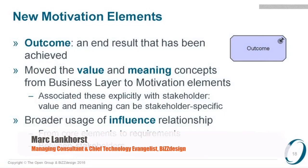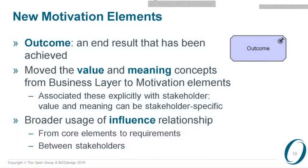We have added concepts to the motivation elements, and one important concept is called outcome. If you've used ArchiMate, you know we have a concept called goal, but goals are nice — you want to achieve something — but you also want to report the outcomes, the results that have been achieved. Looking at the symbol, the goal symbol is a dartboard, and when you have an outcome, the dart is in the bullseye of the dartboard. That's one new concept in the set of motivation elements.